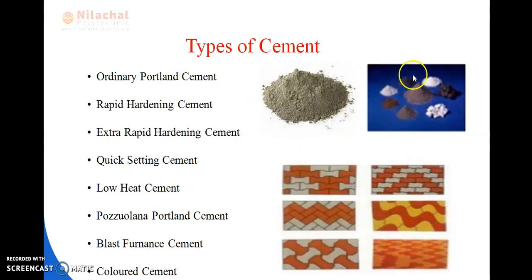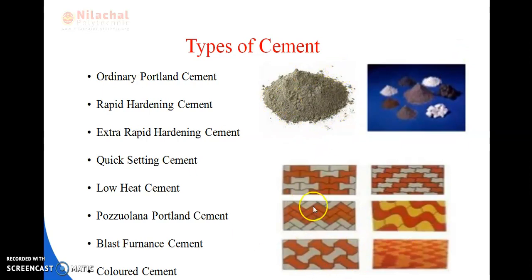You can see in the diagram — these are the colored cement. Colored cement is also used in our tiles while constructing. So the types of cement are: Ordinary Portland Cement (OPC), rapid hardening cement, extra rapid hardening cement, quick setting cement, low heat cement, Pozzolana Portland cement, blast furnace cement, and colored cement.